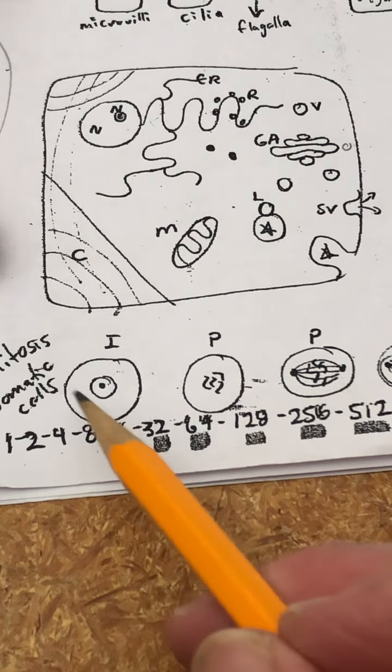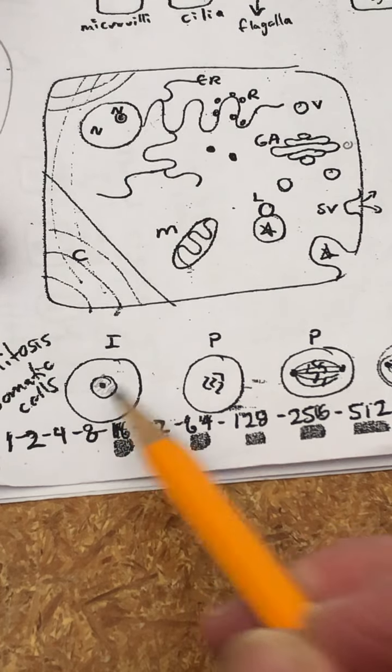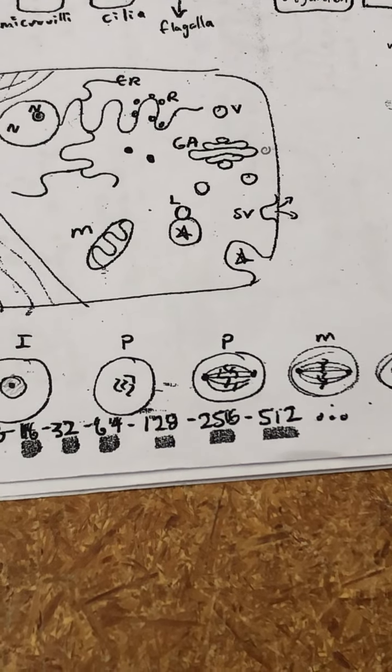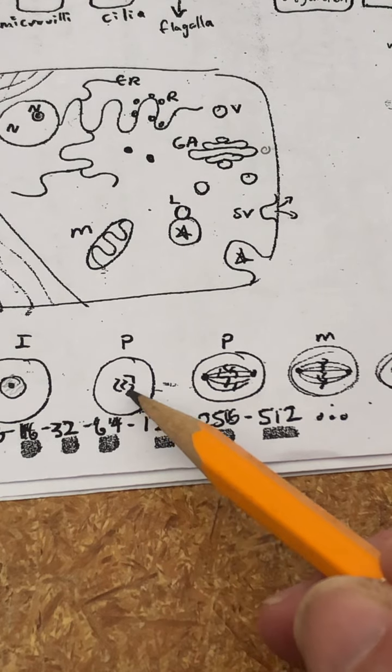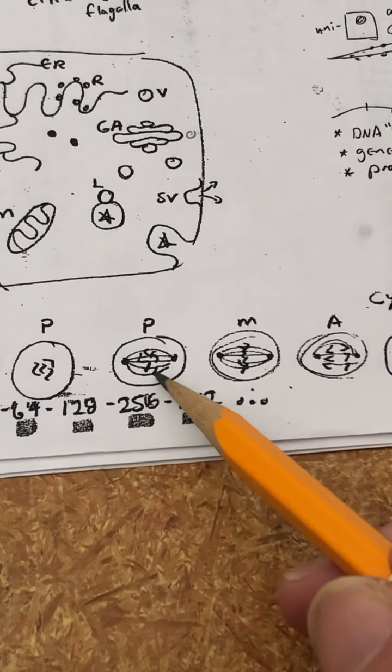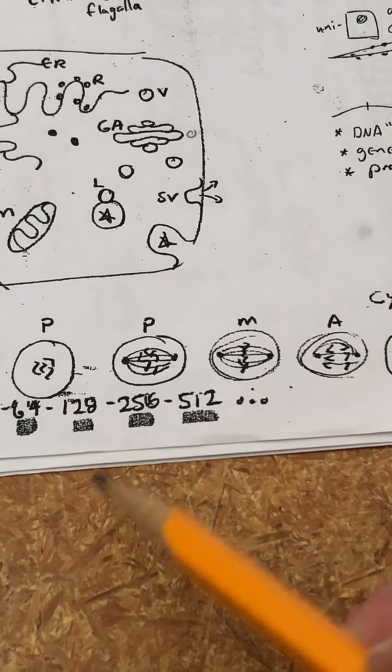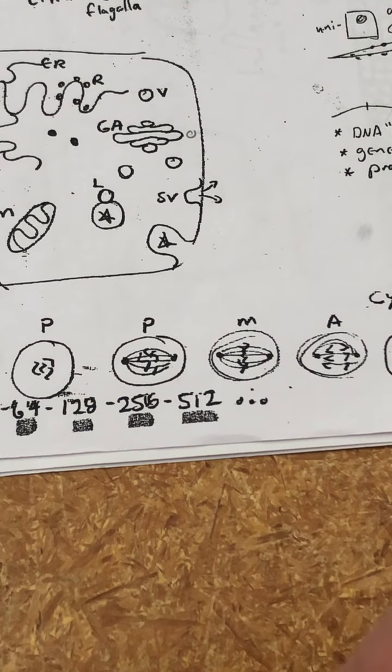In interphase, the cell is doing its work. There is a nuclear envelope, there may be a nucleolus, and there's chromatin, evenly colored material around it. In prophase, the first part of mitosis, the nuclear envelope will disappear, the chromatin becomes chromosomes, and you begin to create a spindle. The centrioles move to opposite ends of the cell, they create the spindle in between, they catch the chromosomes inside.